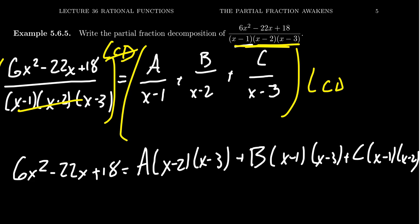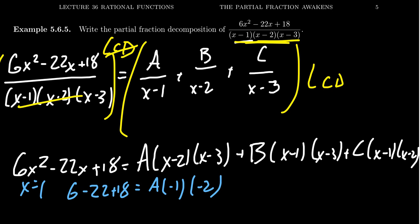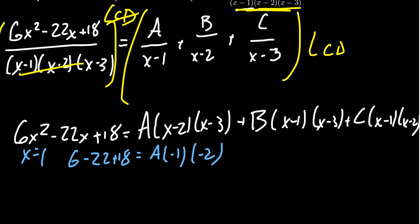So now let's do our annihilating values here. I'm going to start off with x equals 1. If you plug in x equals 1, B would annihilate, C would annihilate. And so on the left-hand side, you're going to get 6 minus 22 plus 18. This is equal to A times negative 1, 2 minus 1 there, and then you're going to get negative 2, 1 minus 3. B and C got annihilated. On the left-hand side, we have to take 6 minus 22 plus 18. 6 and 18 together is 24 minus 22 is 2. So we get 2 is equal to positive 2A. So we see that A should equal 1.